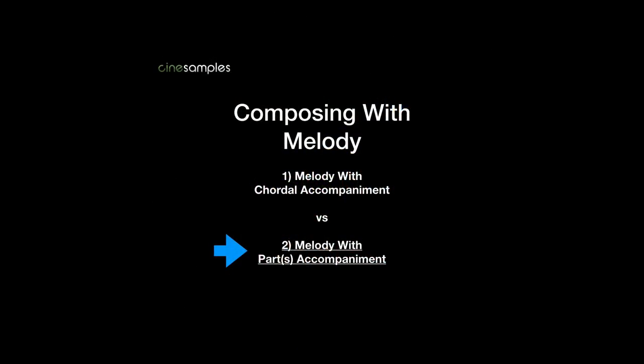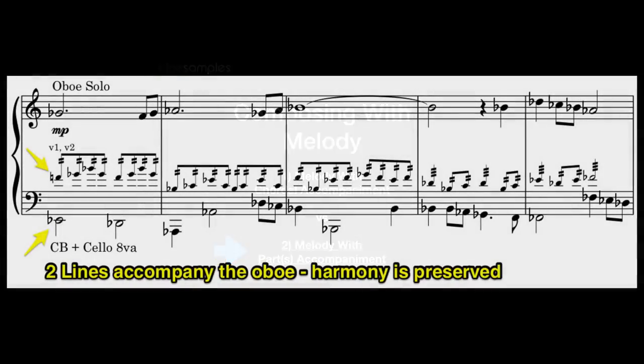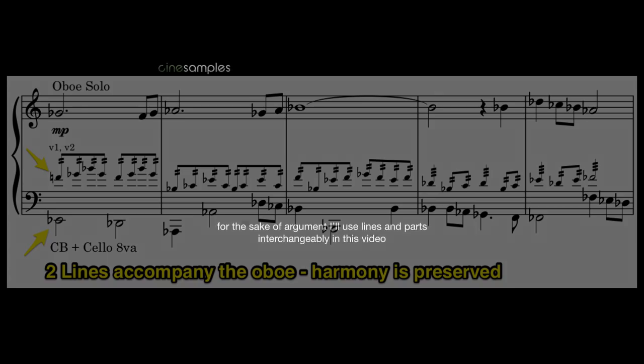This second method still involves a melodic element, but instead of being accompanied by block chords, it is accompanied by other lines — always at least one other, but oftentimes several. A line, or part, is something that provides enough interest to the ear that it subconsciously marks it worthy of recognition. The ear recognizes it, tracks it, and compares it to the other parts. They are often, but not always, monophonic, and usually have a singable quality to them.